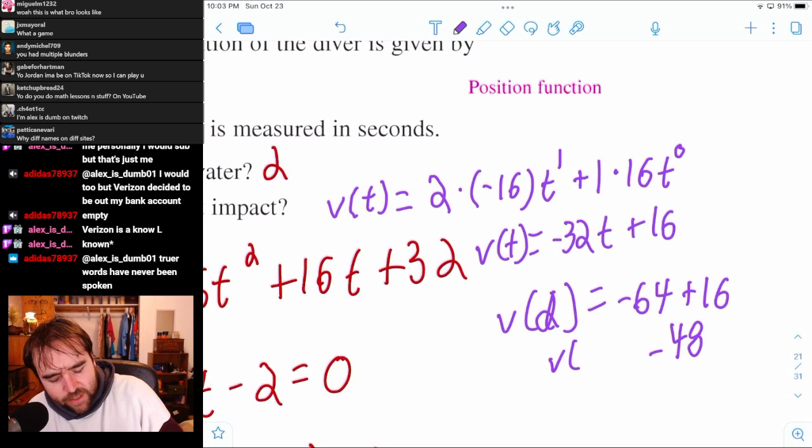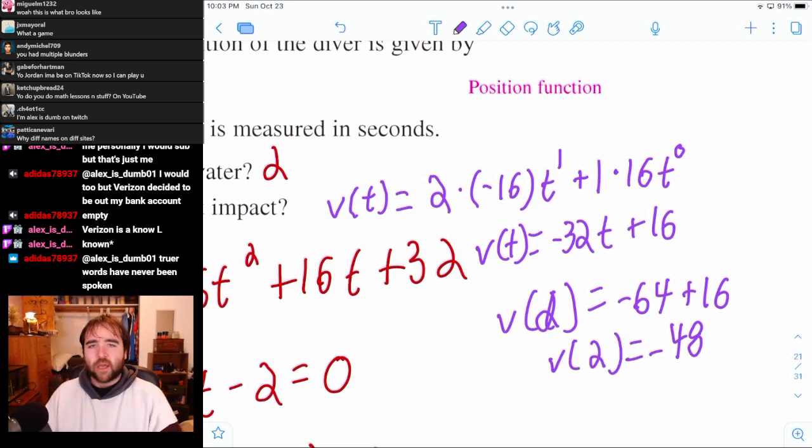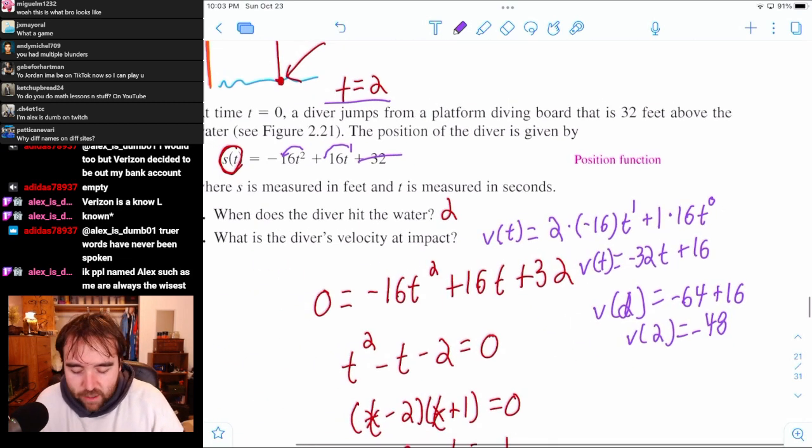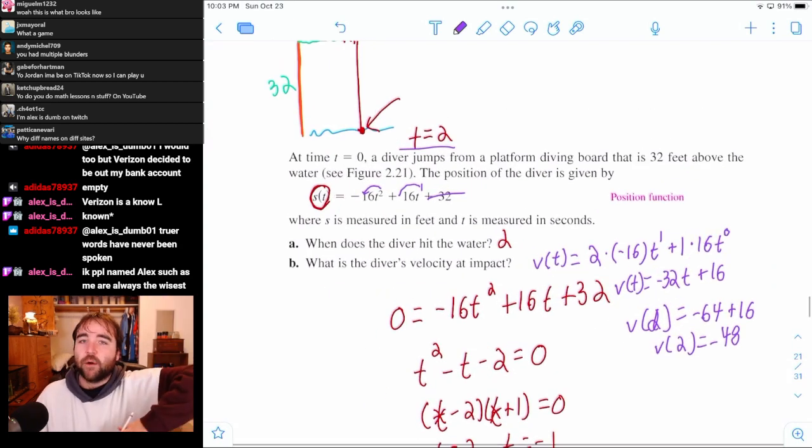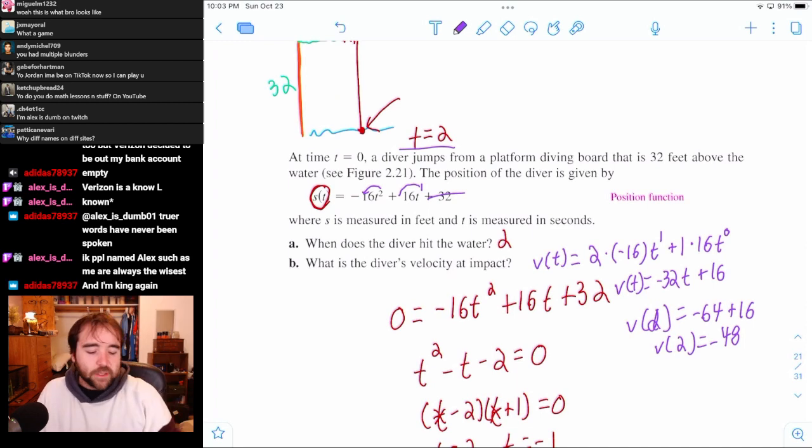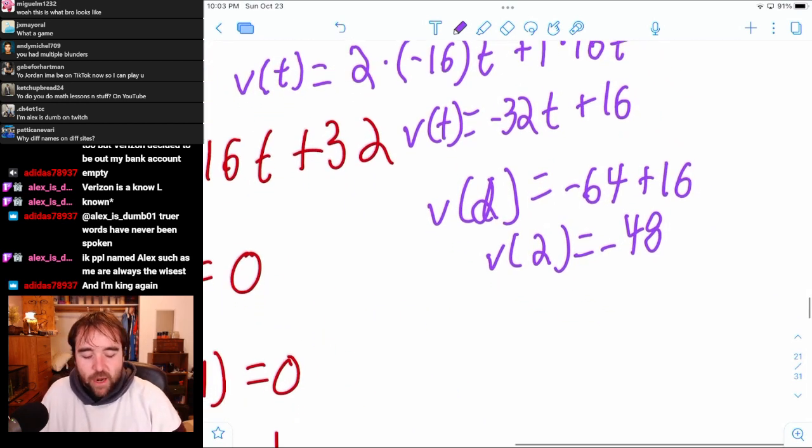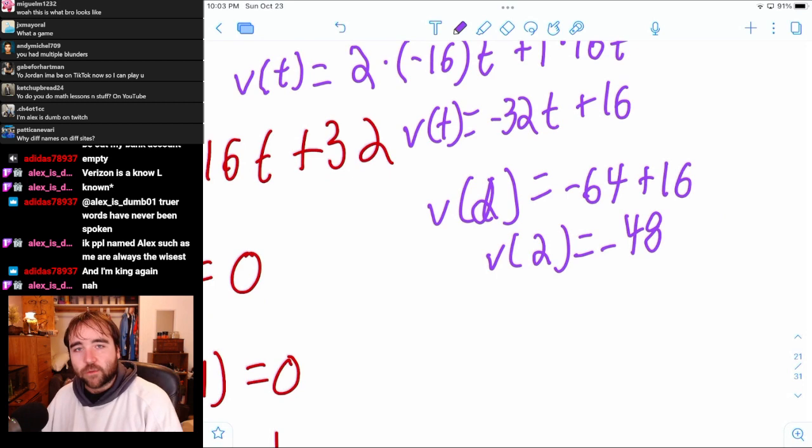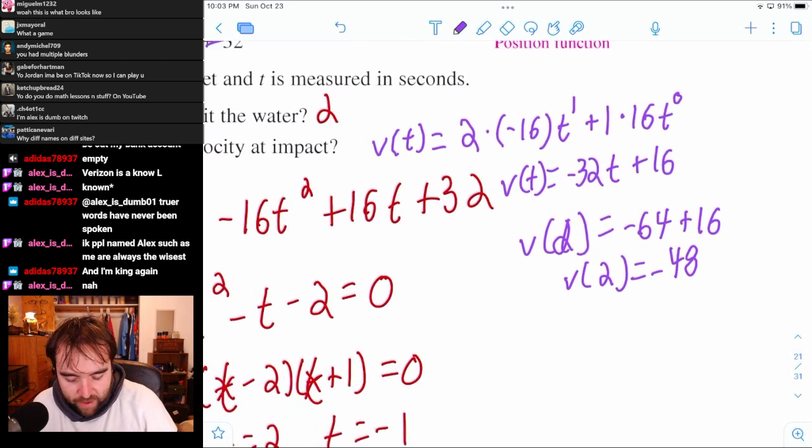So how is our velocity negative? Why is our velocity negative when we hit the water? Well, because a negative velocity just means you're going down. A positive velocity would mean you're going up. So it makes a lot of sense that she's going down at negative 48 feet per second when she hits the water. That's fast. That's very fast. But that makes sense.